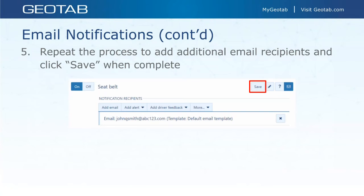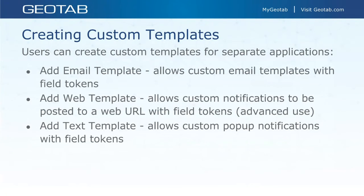I've mentioned custom templates a few times. There are three separate applications: number one, add email template — for creating email notifications when a rule is broken; number two, a web template — for advanced use, allowing custom notifications to be posted to a web URL; and number three, a text template — for creating custom pop-up notifications for alerts within the database, or custom notifications for the GO Talk device.